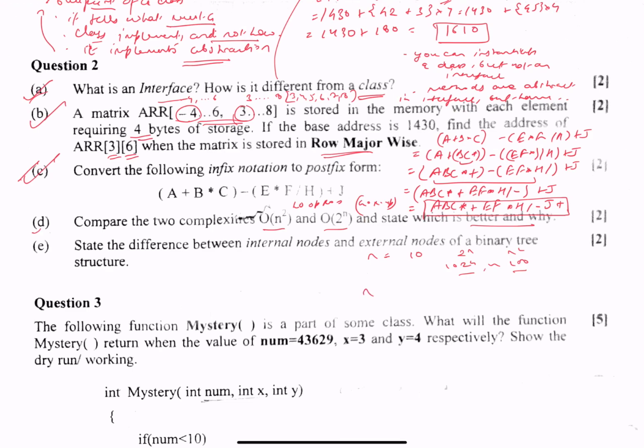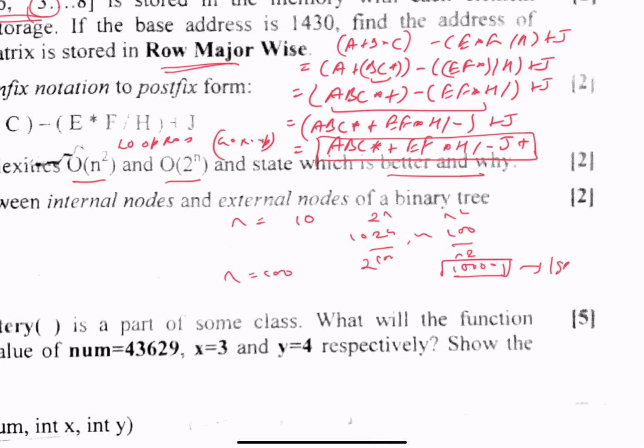So n² will be completed easily within one second. But if you calculate 2¹⁰⁰, which equals 2¹⁰...